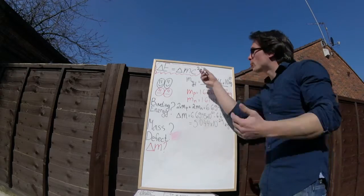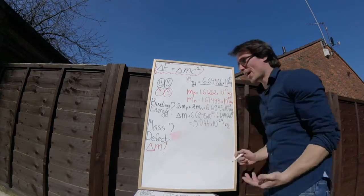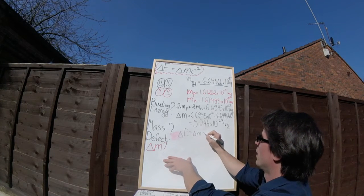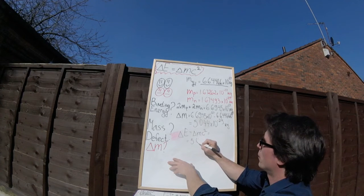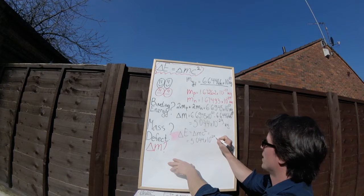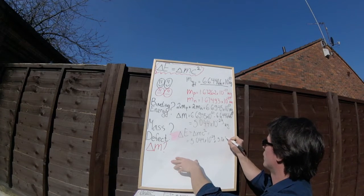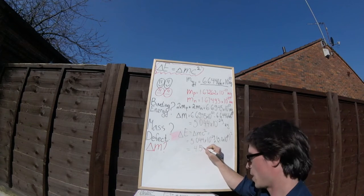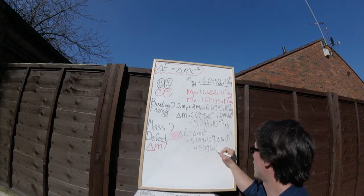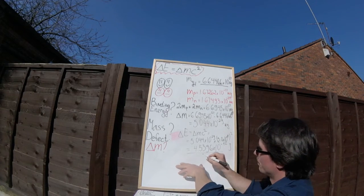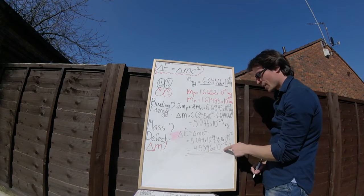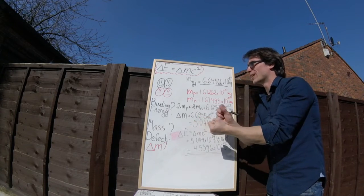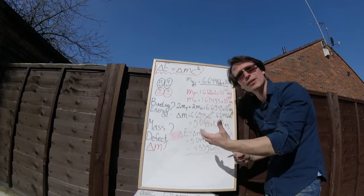Now that we've got the mass defect, because we know what the speed of light is, we can calculate our binding energy. Delta E is equal to delta M C squared, most famous equation in physics, so that's going to be 5.044 times 10 to the power of minus 29, multiply by the speed of light squared, so that's 3.0 times 10 to the 8, all of that is squared. And if we put that into a calculator, we're going to get 4.5396 times 10 to the power of minus 12 joules. This over here is the energy that we have to input in to separate an alpha particle into its individual nucleons.